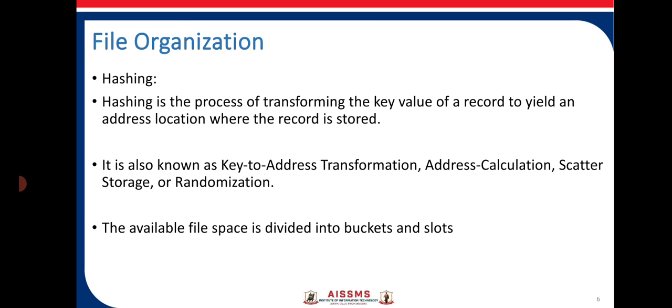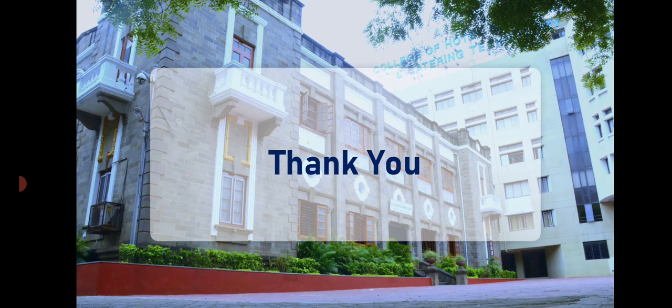What is hashing? It is a process of transforming the key value of a record to yield an address location where the record is stored. It is also known as key-to-address transformation, address calculation, scatter storage, or randomization. The available file space is divided into buckets and slots.